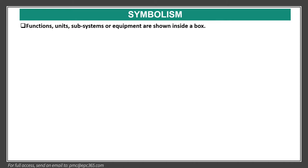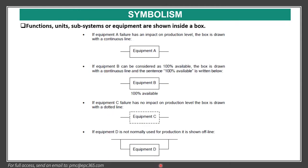The symbols used for functional units, subsystems, and equipment are shown inside boxes. For example, if equipment A has a failure that has an impact on production level, the box is drawn with a continuous line. If equipment B can be considered as 100% available, the box is drawn with a line and the label '100% available'. If equipment C failure has no impact on production level, the box is drawn with a dotted line.